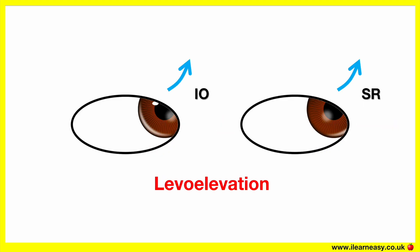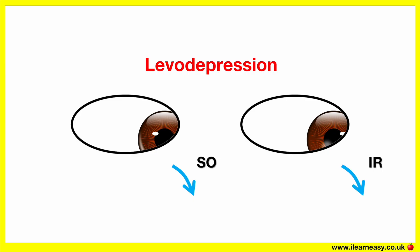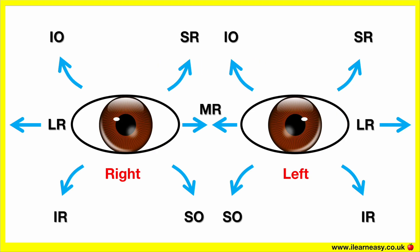Levoelevation — this is when you ask the patient to look up and to the left. This position assesses the function of the left superior rectus and right inferior oblique. Levodepression — this is when you ask the patient to look down and to the left. This position assesses the function of the left inferior rectus and right superior oblique.